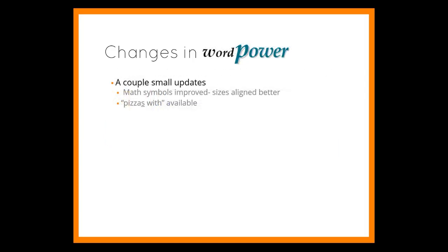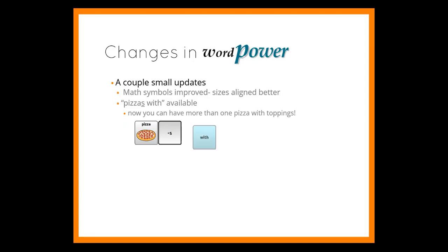A couple of minor changes include math symbol sizes, which are better aligned, and you can now order more than one pizza with toppings.